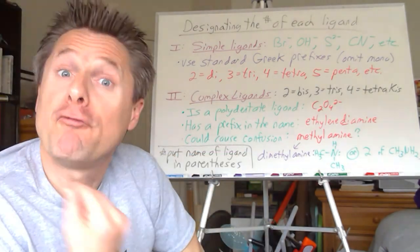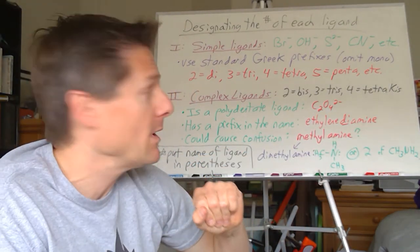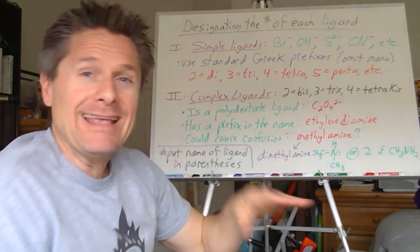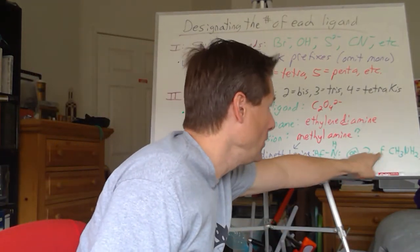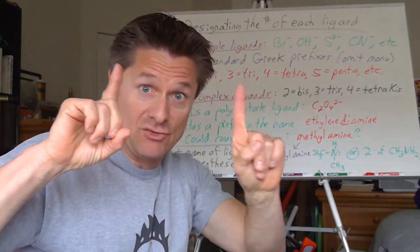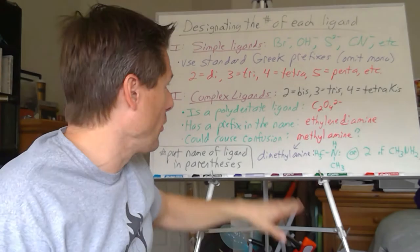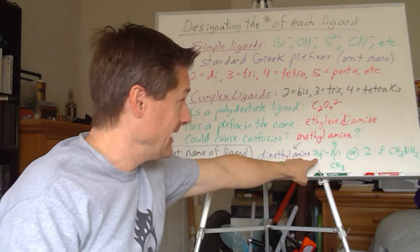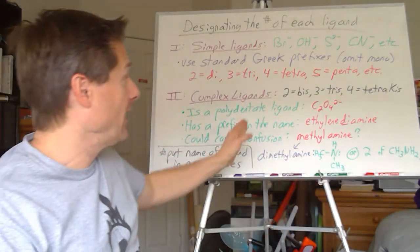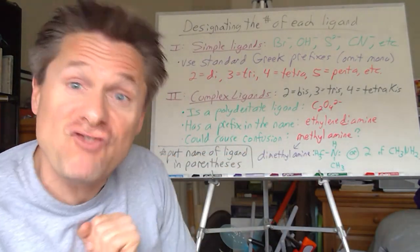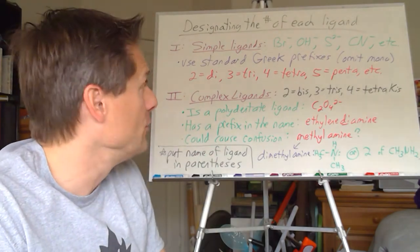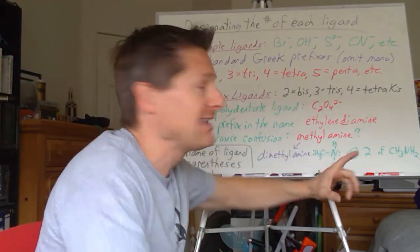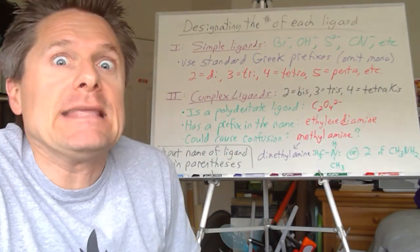Also use bis/tris/tetrakis for anything that might cause confusion. For example, methylamine: if you said dimethylamine, that's ambiguous — does it mean two methylamines attached, or one dimethylamine molecule? To avoid that confusion, you'd say bis(methylamine) for two methylamines, or bis(dimethylamine) for two dimethylamines.